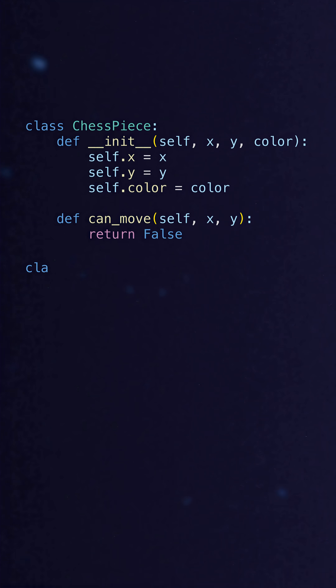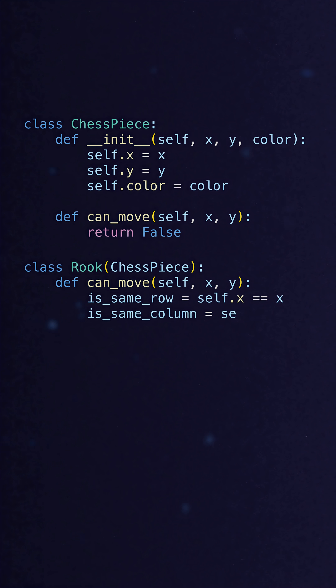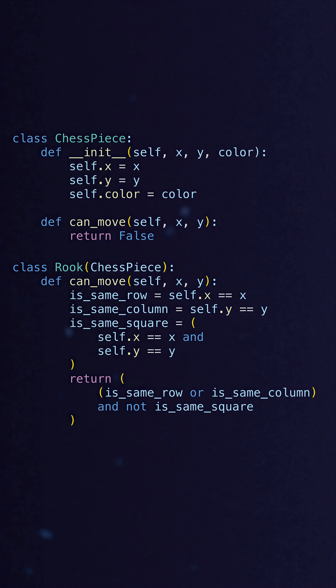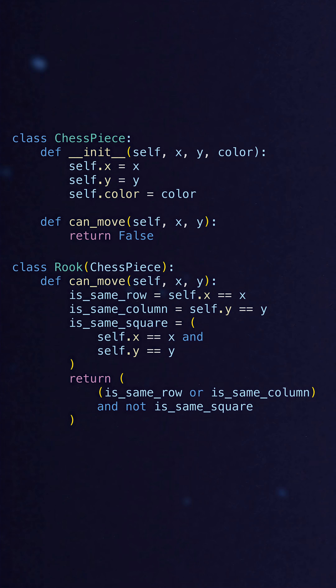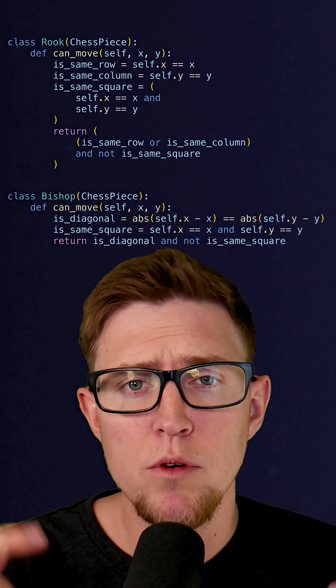So now in the rook class that inherits from chess piece, we create another can_move method that looks like this. It has its own implementation logic that enforces that rooks can only move in straight lines. And in the bishop class, we can implement it differently, ensuring that they can only move diagonally.